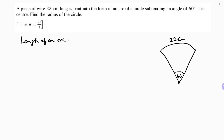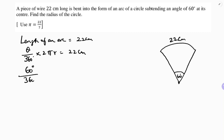The formula for the length of an arc is theta by 360 degrees into 2 pi r, which equals 22 centimeters. The angle given is 60 degrees, so we have 60 by 360 into 2 into pi.